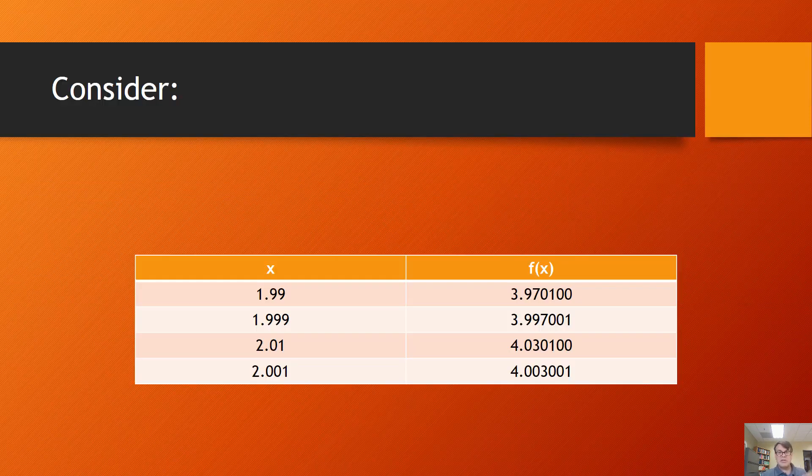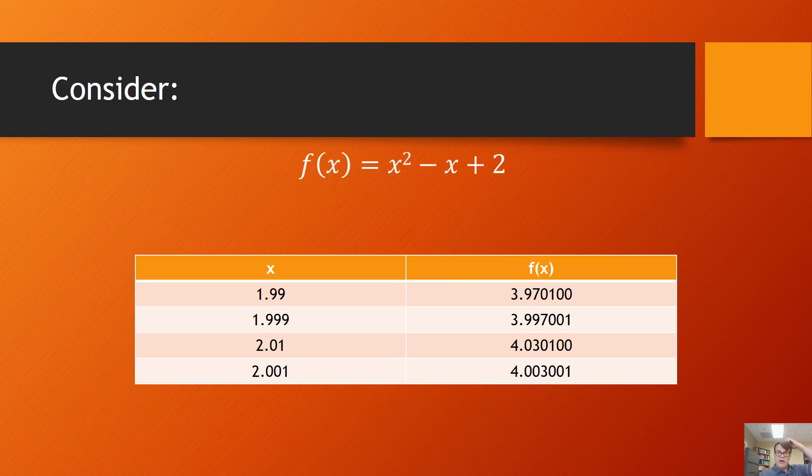This is an example from that textbook. Consider this equation: f(x) equals x squared minus x plus 2. What happens to the value of this equation as x approaches 2? You could just plug a 2 in: 2 squared is 4, minus 2 is 2, plus 2 equals 4.